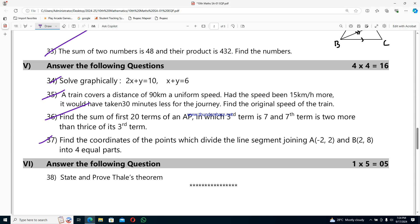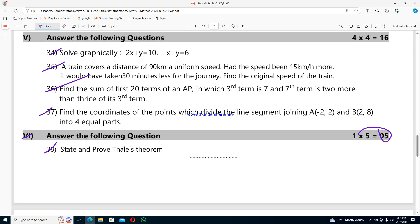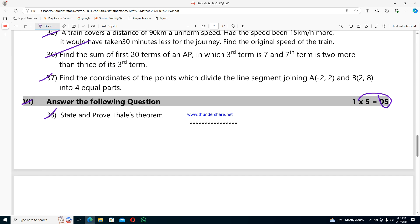Sixth row, last question for total 5 marks. Question 37: state and prove Thales theorem. Thanks for watching guys, please share and subscribe to the channel.